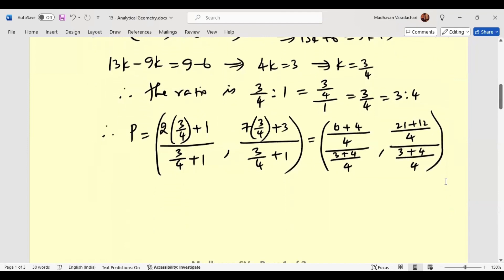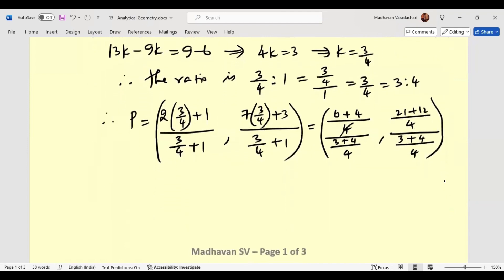Therefore, I can cancel now 4 and 4 in denominator and numerator in both. Therefore, the point P will be 10 by 7 and 33 by 7. So that is the solution for this particular question.